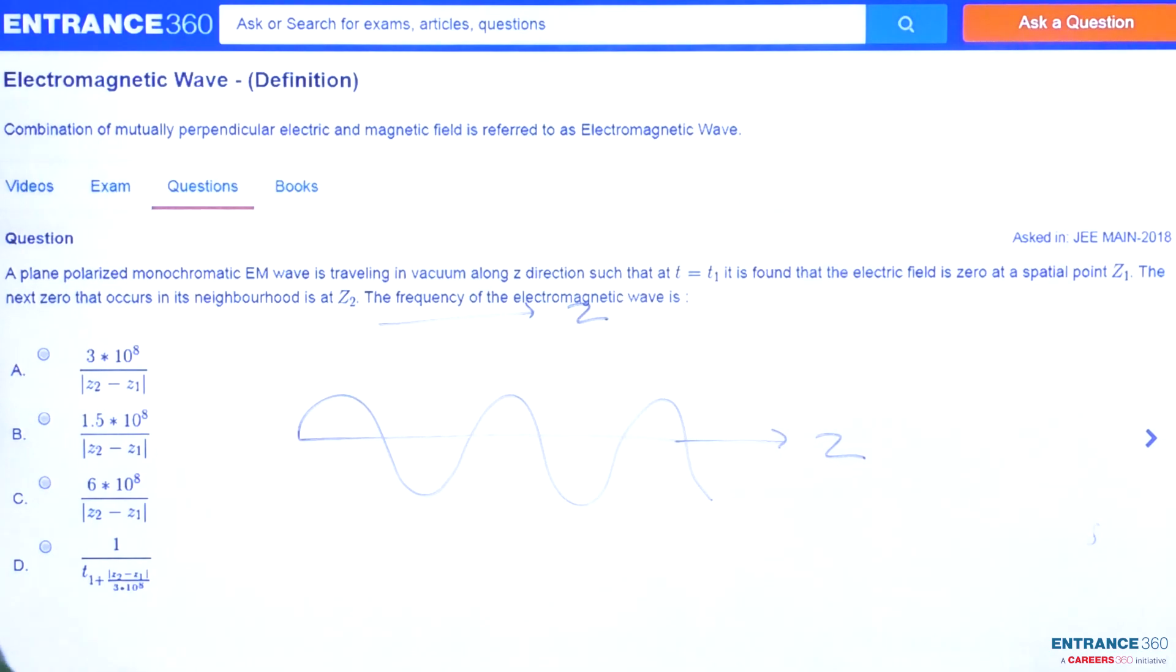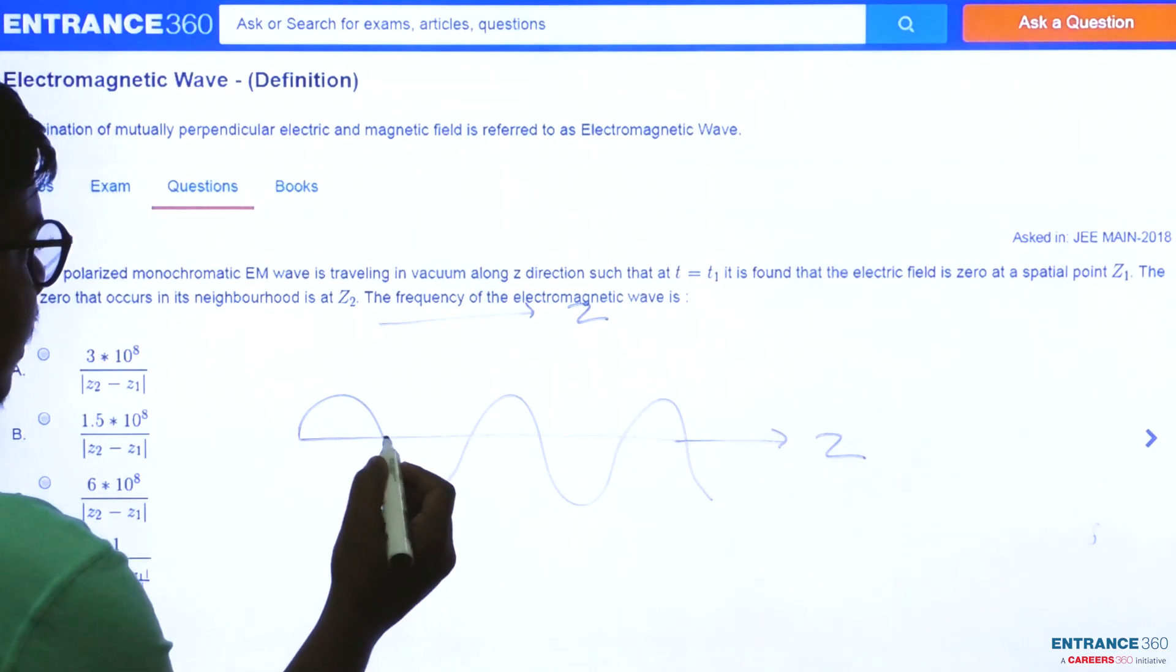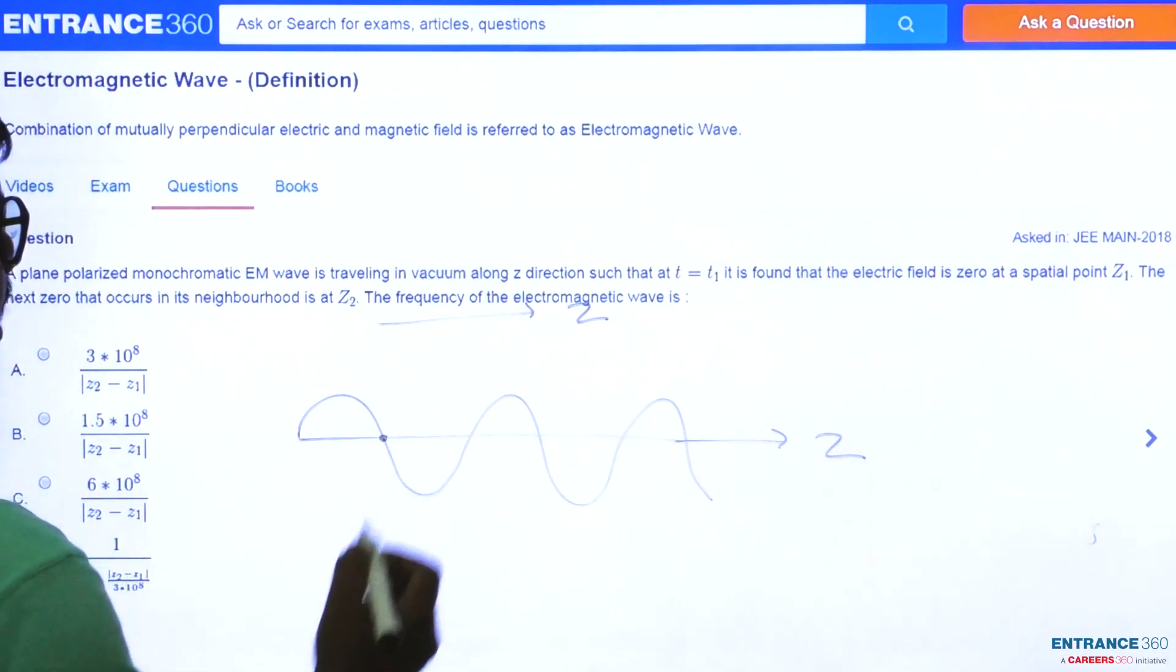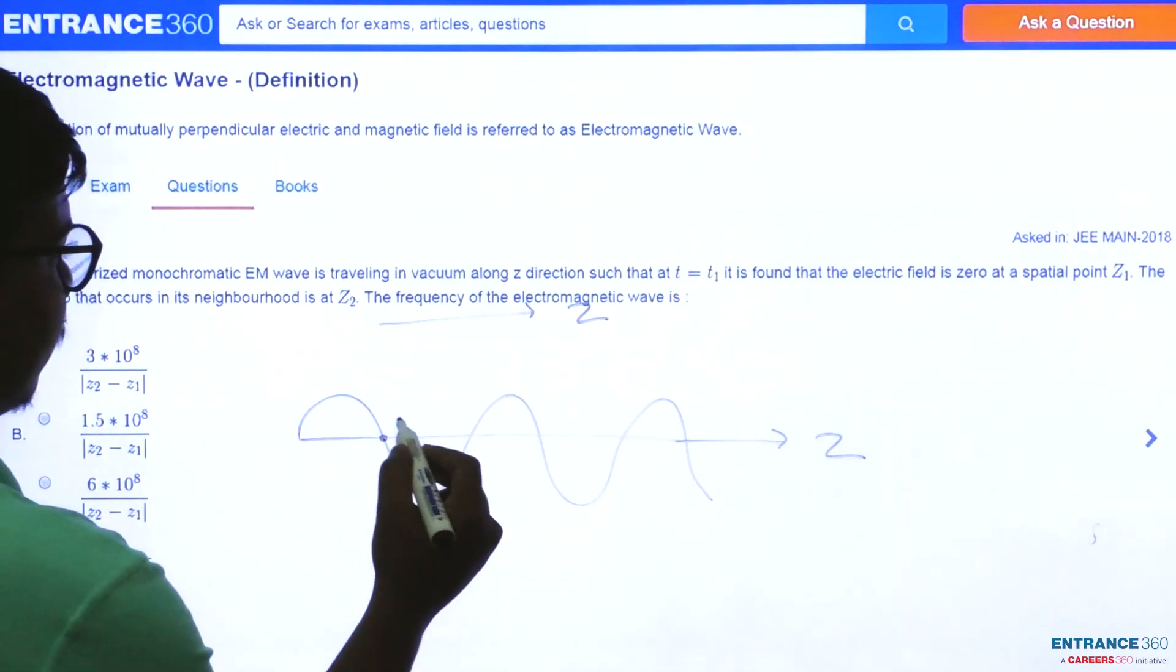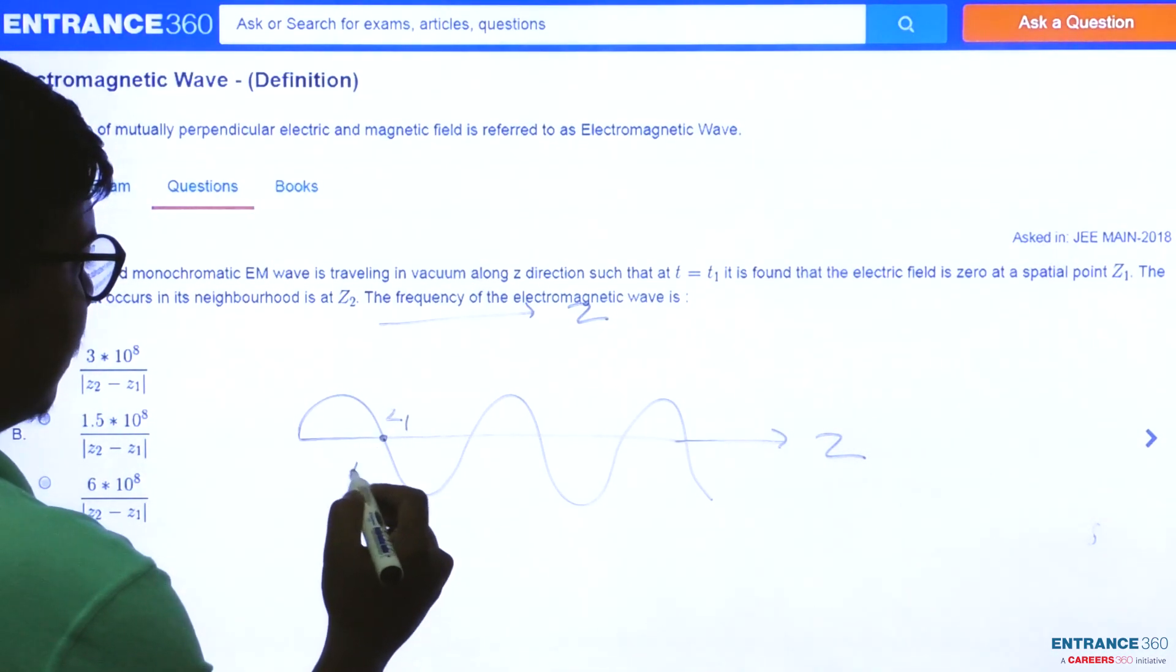So at t equal to t1, let's suppose this is t equal to t1, we found that electrical field is 0 at z1. So this is z1 and t equal to t1.